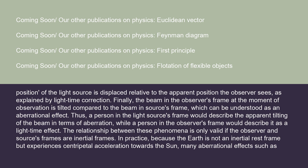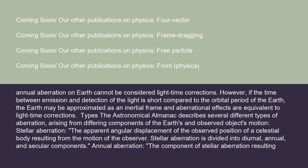The relationship between these phenomena is only valid if the observer and source's frames are inertial frames. In practice, because the Earth is not an inertial rest frame but experiences centripetal acceleration towards the Sun, many aberrational effects such as annual aberration on Earth cannot be considered light-time corrections. However, if the time between emission and detection of the light is short compared to the orbital period of the Earth, the Earth may be approximated as an inertial frame and aberrational effects are equivalent to light-time corrections.